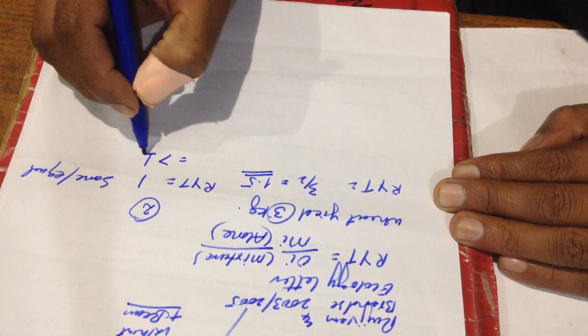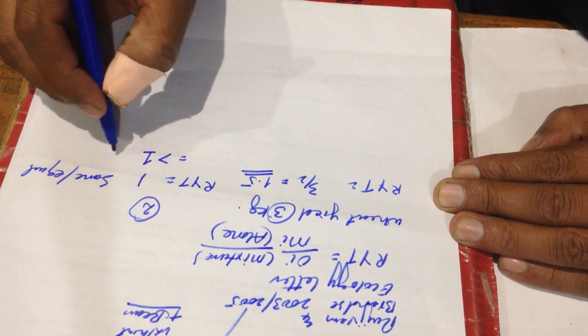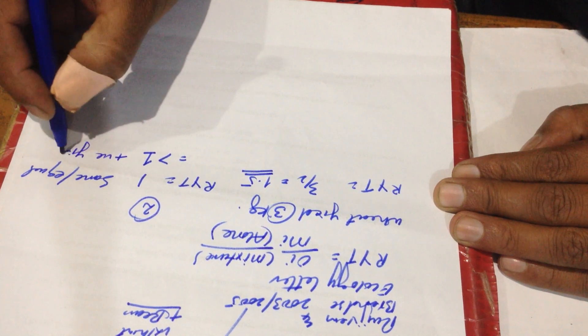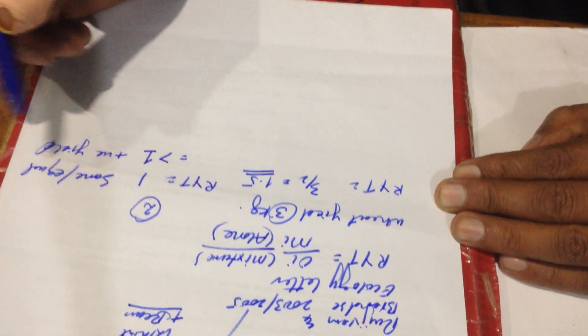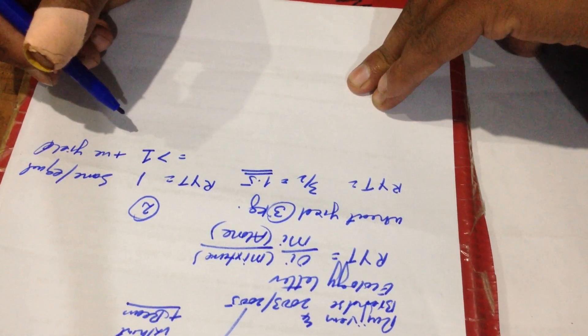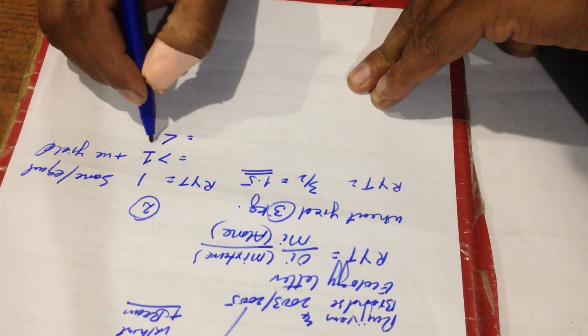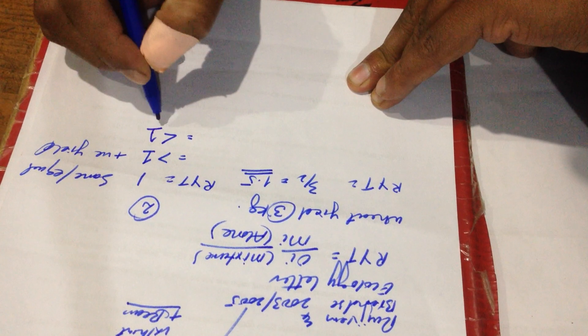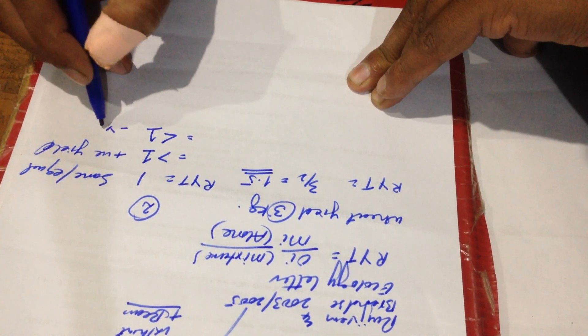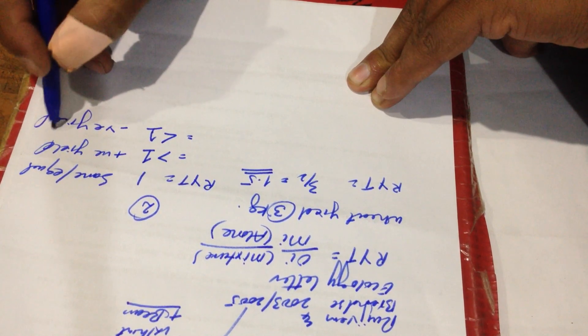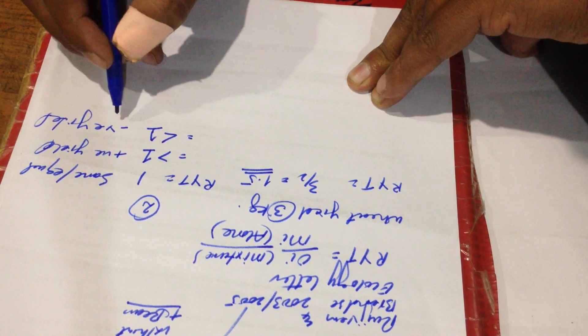If the yield is more than one, it means that the intercropping system has positive yield, meaning the yield will be increased when the plant is grown along with other plants on the same piece of land. But if the answer is less than one, it means this is negative yield, meaning we should not proceed for the intercropping system.